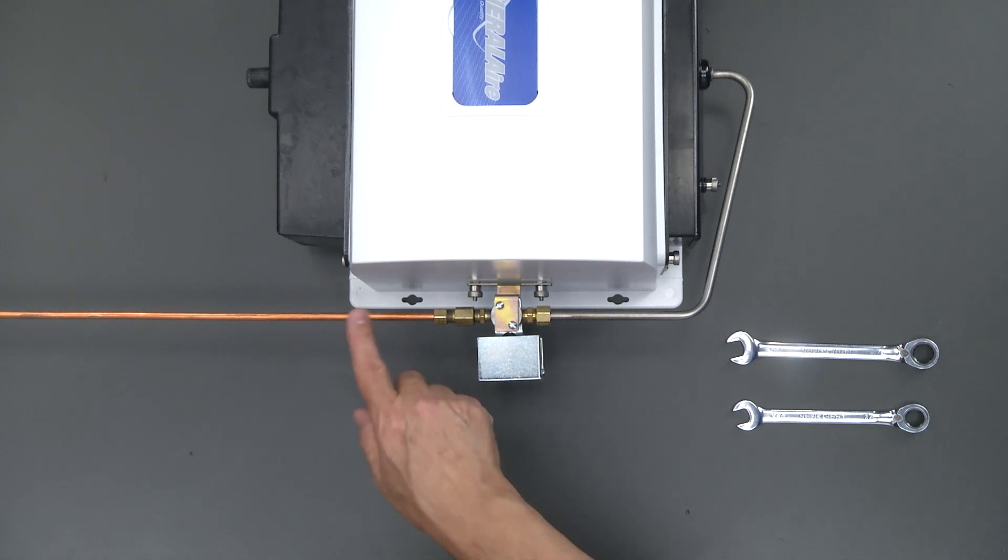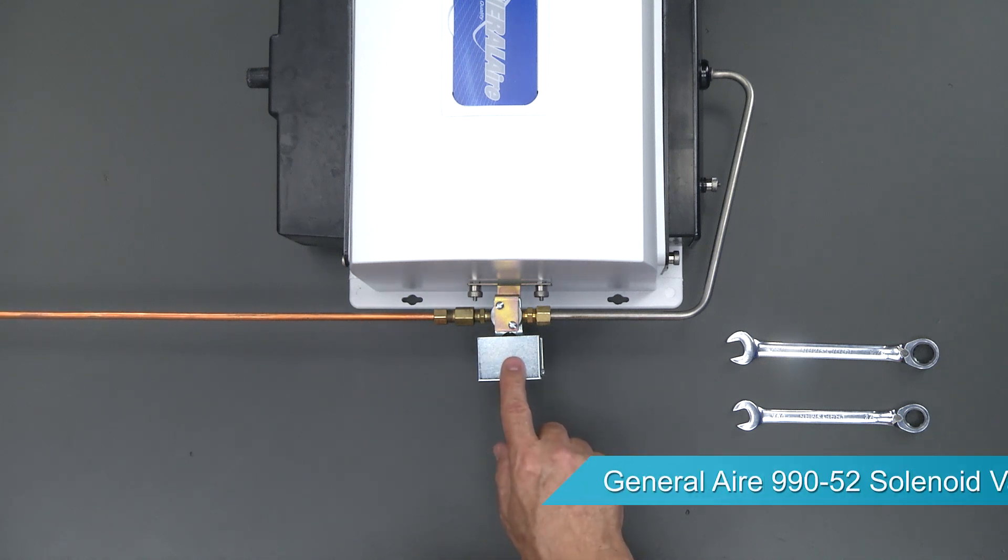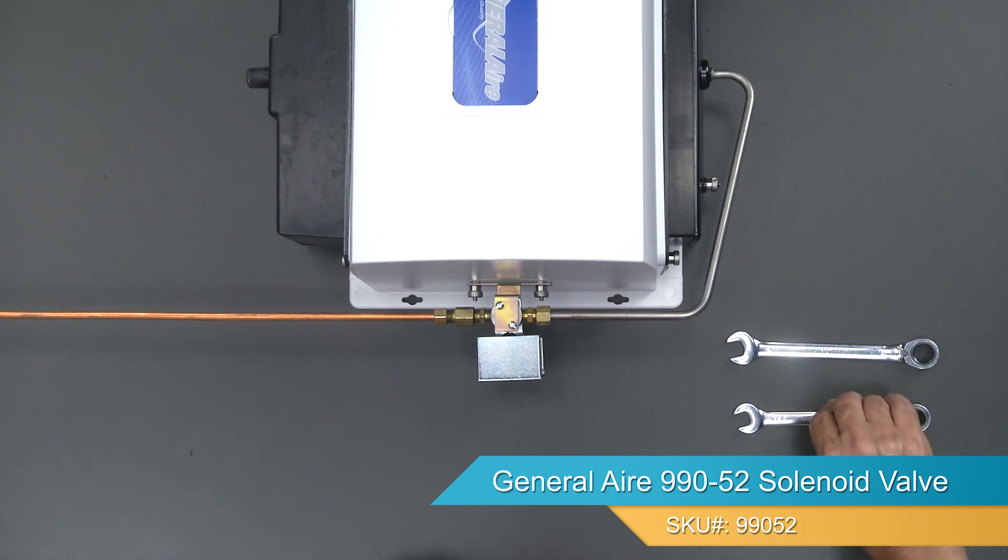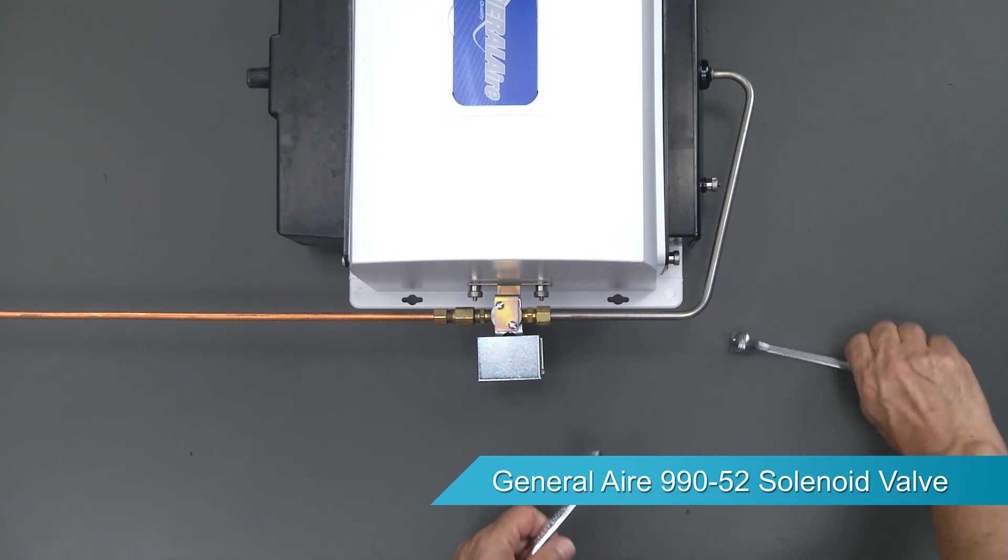We've already turned off the water and disconnected the electrical. Now we're going to change out this valve. I have here a half inch and a nine-sixteenths inch wrench, so let's loosen up these pipes.